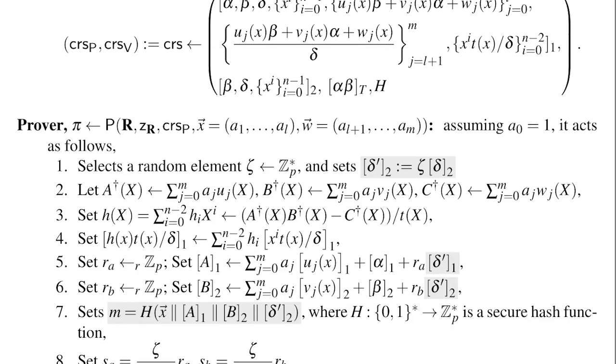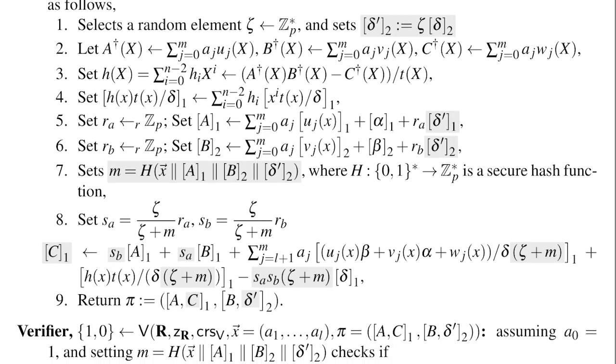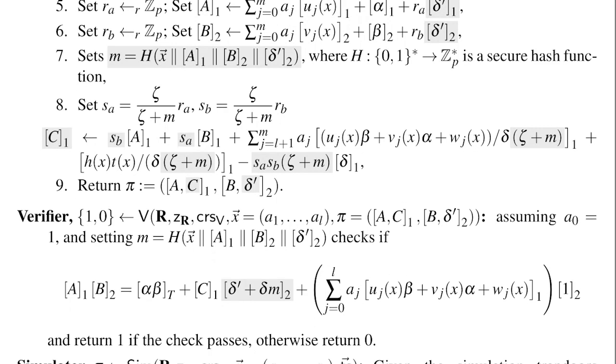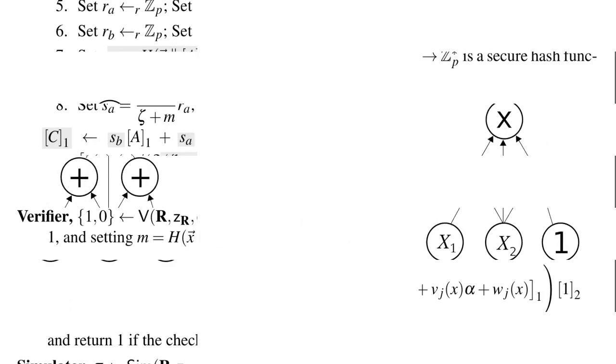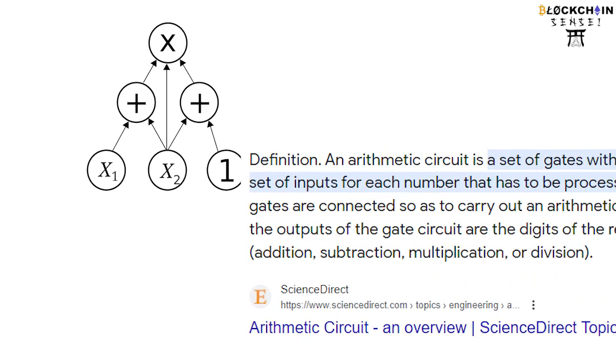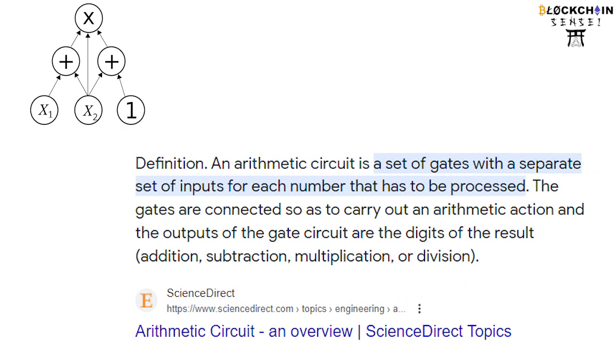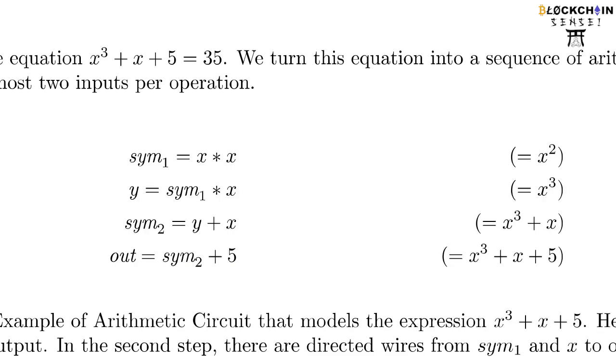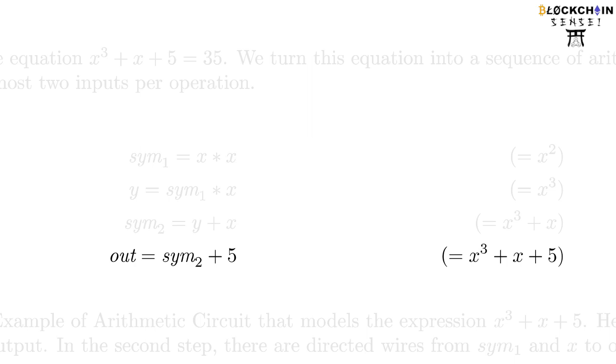Now the math behind ZK-SNARK proves becomes very high level very quickly, but I will simplify it to high school level maths. Essentially, arithmetic circuits are used to compute polynomials. The main functions of these arithmetic circuits are to prove that you know some polynomial f(x) that has some roots. First, the polynomial is written in terms of arithmetic gates, and in this image we can see how x cubed plus x plus 5 is written as the sequence of gates that handle at most two inputs per operation.